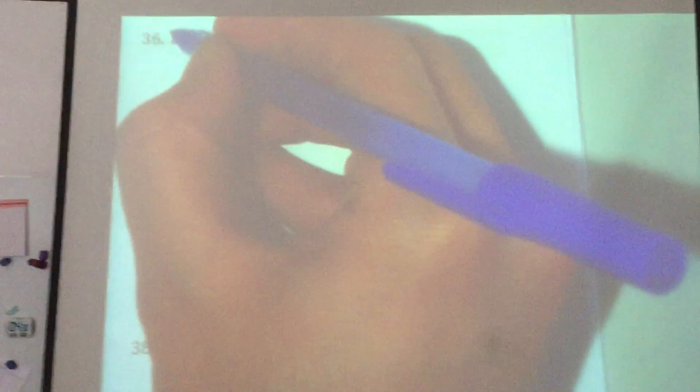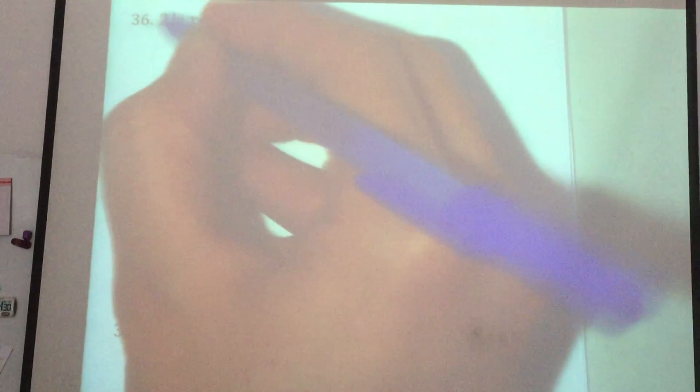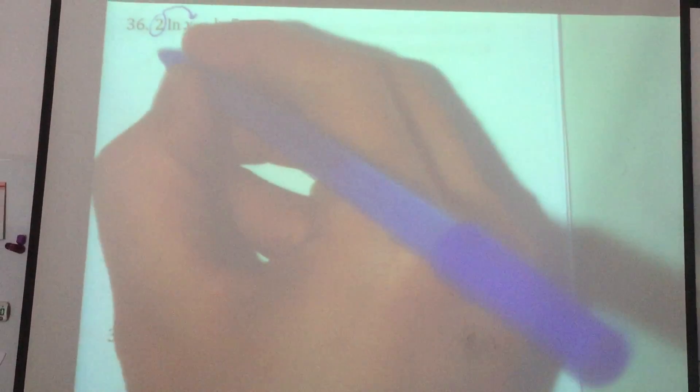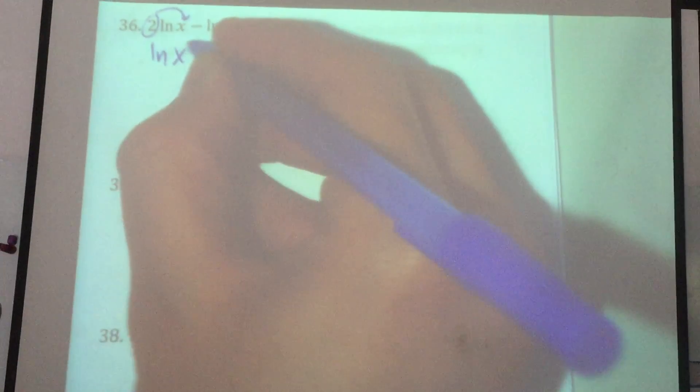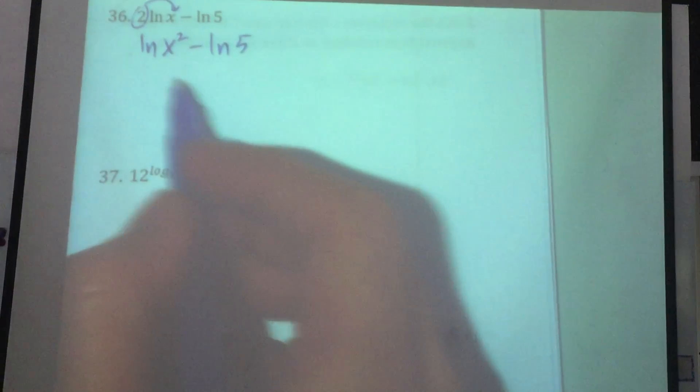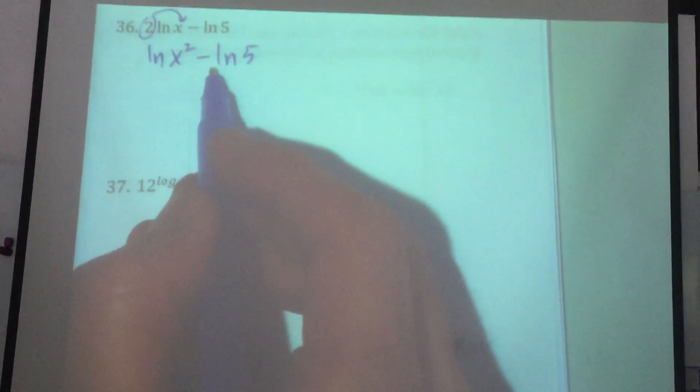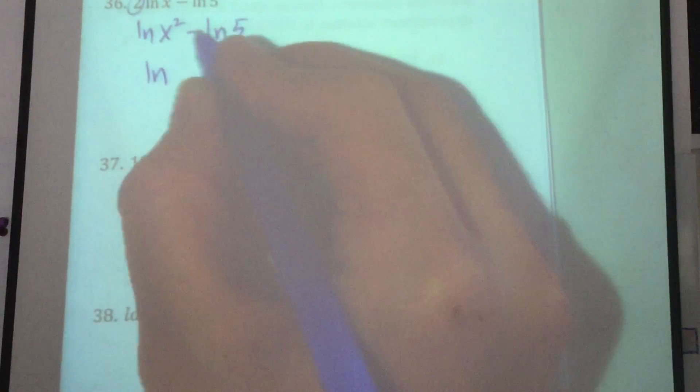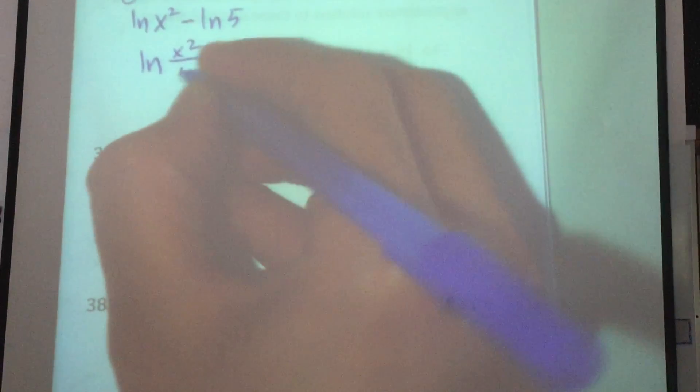I must get rid of this 2. And the only way we can get rid of the coefficient is to make it an exponent. So this is going to be natural log of x squared minus natural log of 5. Now you can put them together because now they have no coefficient, and they have the same base.